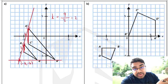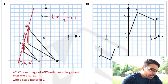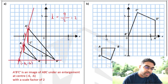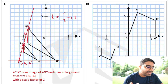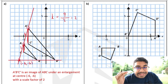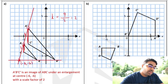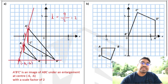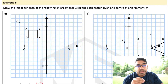Now we're ready to describe this enlargement. We can say that A prime B prime C prime is an image of ABC under an enlargement at center negative 6, negative 6, with a scale factor of 2. This is how we describe an enlargement.